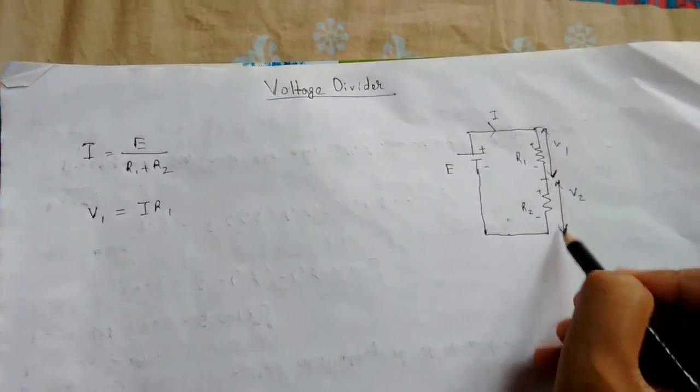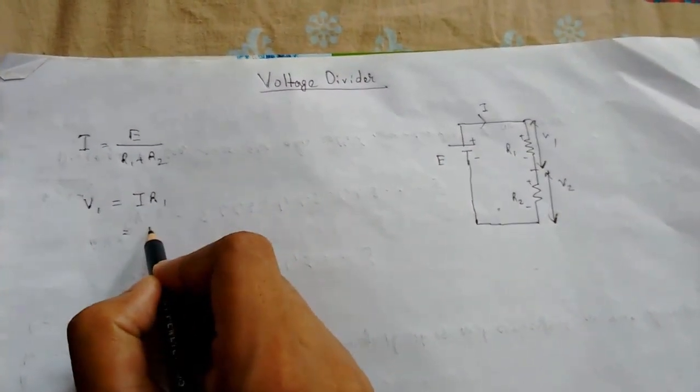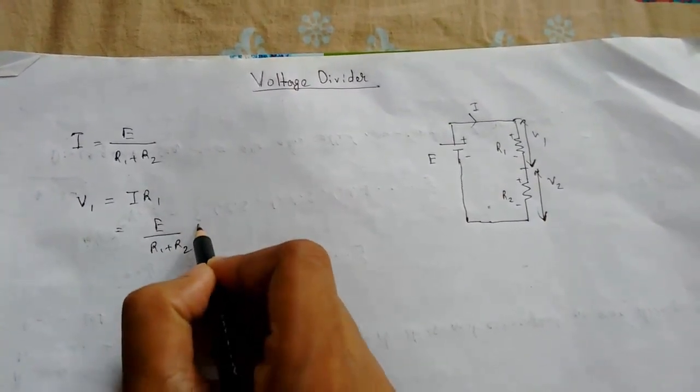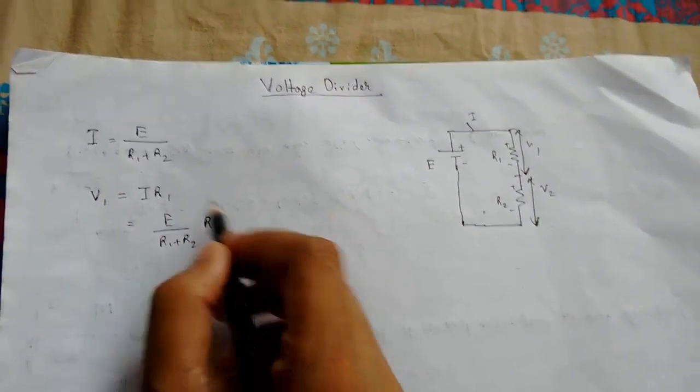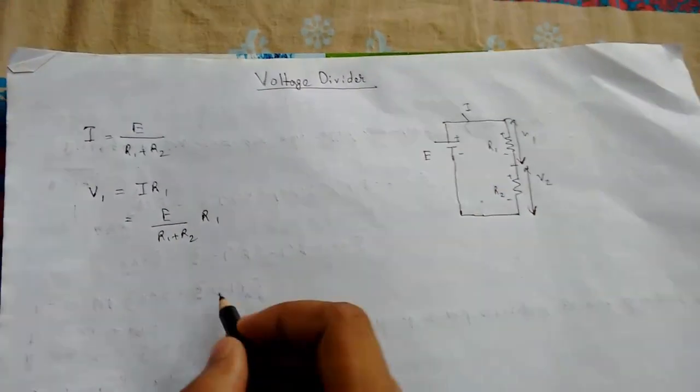Now to calculate voltage through R1, that is V1, it will be I times R1. In series, current will flow the same. The voltage will be V equals I times R1, so it will be I value of I is E upon R1 plus R2 times R1.